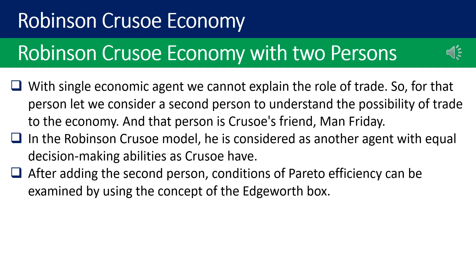Robinson Crusoe economy with two persons: with a single economic agent we cannot explain the role of trade. So we consider a second person to understand the possibility of trade in the economy, and that person is Crusoe's friend, Man Friday. In the Robinson Crusoe model, he is considered as another agent with equal decision-making abilities as Crusoe. After adding the second person, conditions of Pareto efficiency can be examined using the concept of the Edgeworth box.